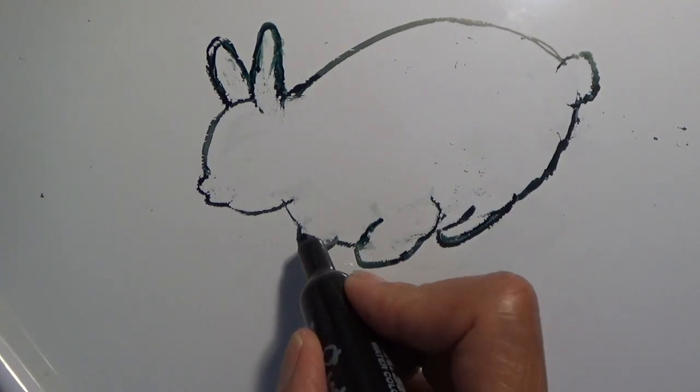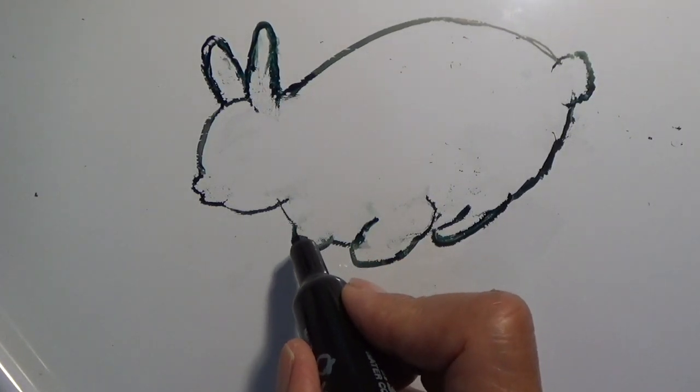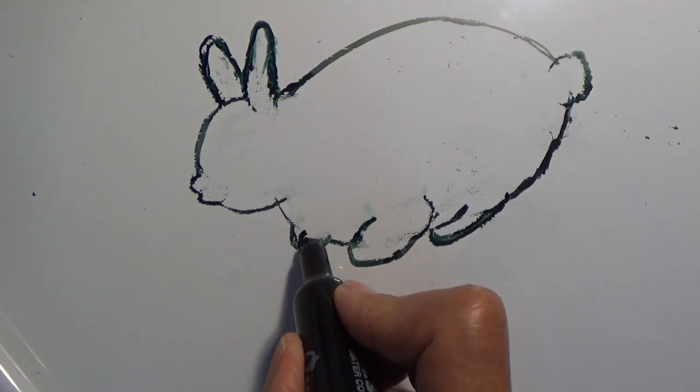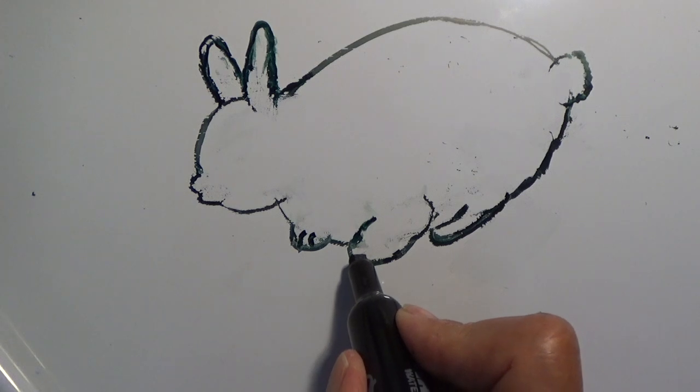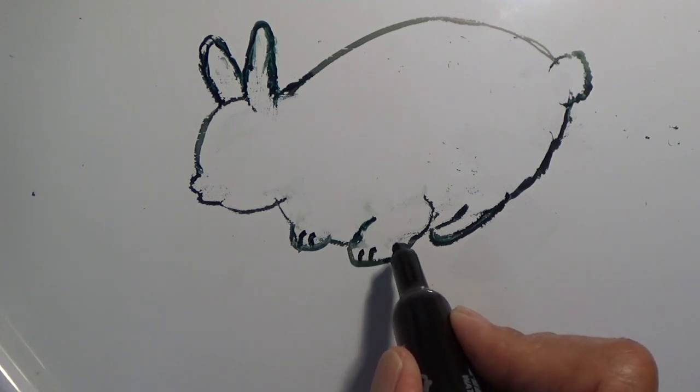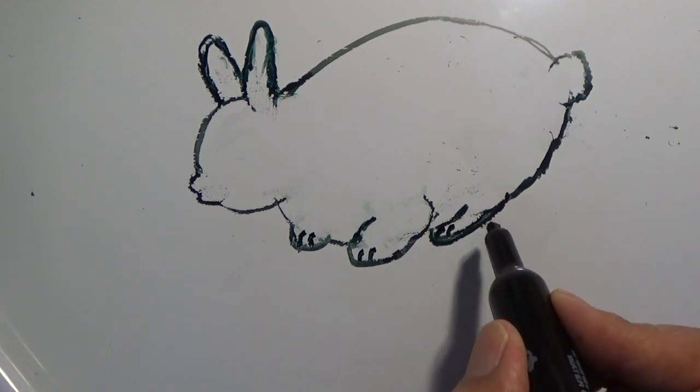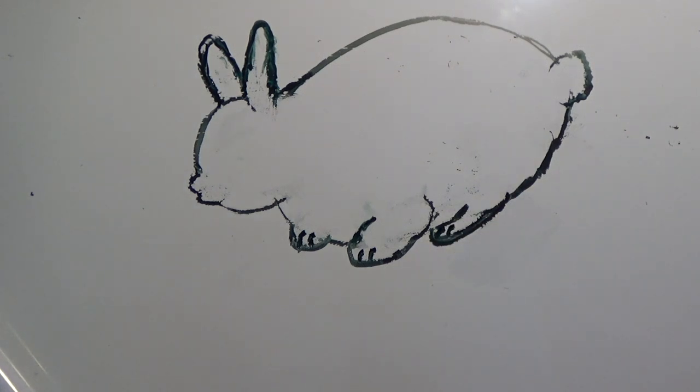Let's add some lines on the paws for the toes. Oh, our rabbit is starting to really look good, huh, boys and girls? We can see that those are his toes, huh?